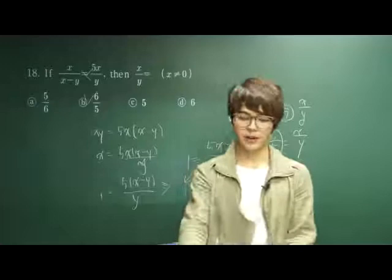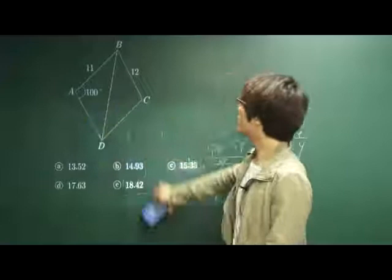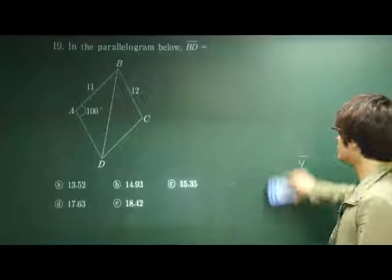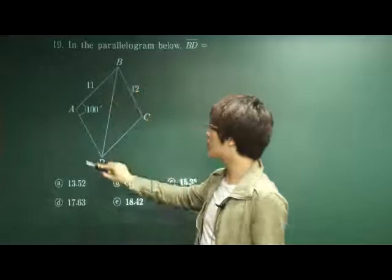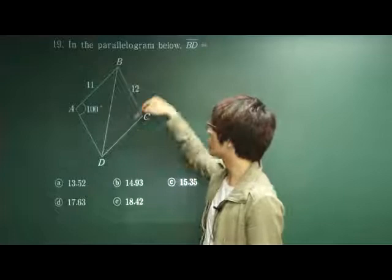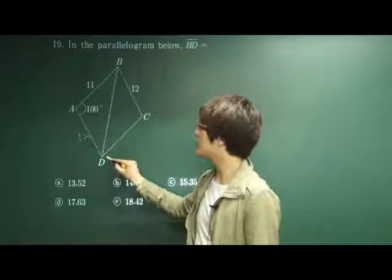Okay, let's move on to number 19. In the parallelogram below, the length of bd is equal to. Which law should we use? When we are given a length of ab and we are given a length of ad. Because this is a parallelogram, a length of bc is equal to length of ad. So here this side is also 12. So we are looking for the length of bd.